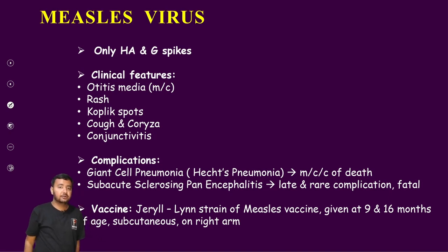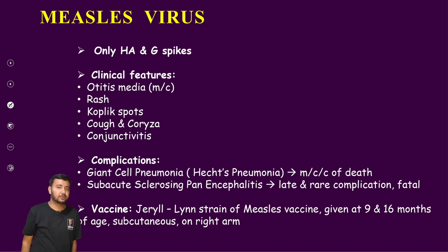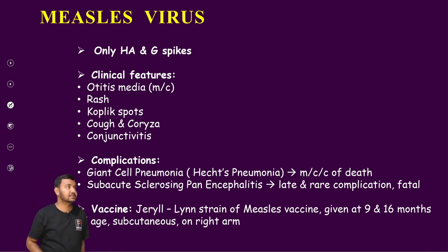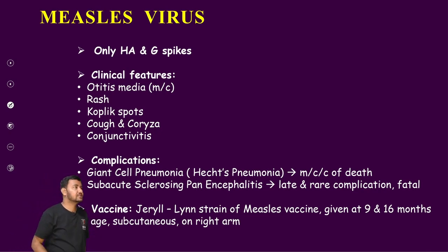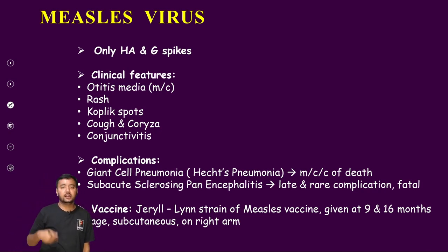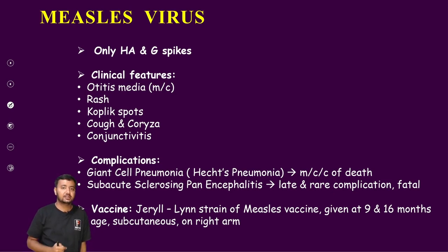Next virus is measles virus. Measles virus has got hemagglutinin and G spikes — these are the antigens for measles virus.